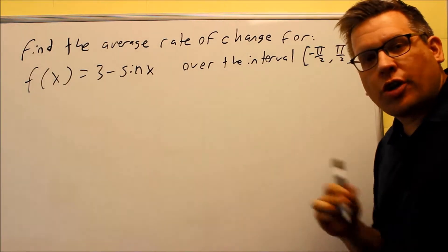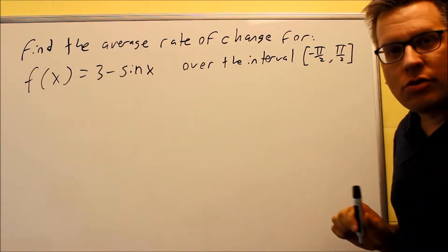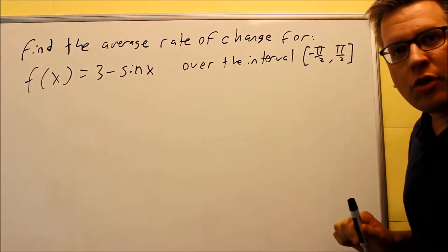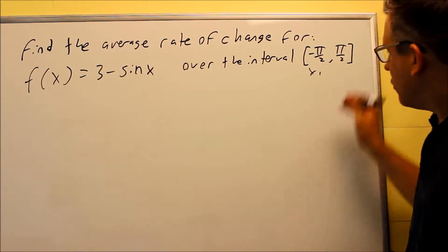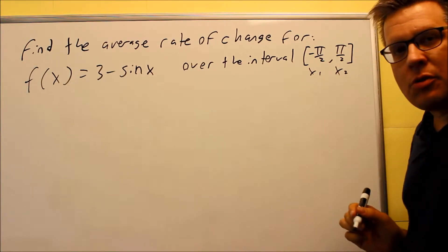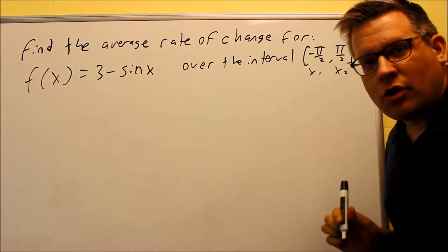Sometimes they may give you x1 and x2, otherwise they might put it into an interval form. If they give it to you in an interval form like that, then we know that x1 is negative pi over 2, x2 is going to be pi over 2. That's what they tell us when they give us an interval.